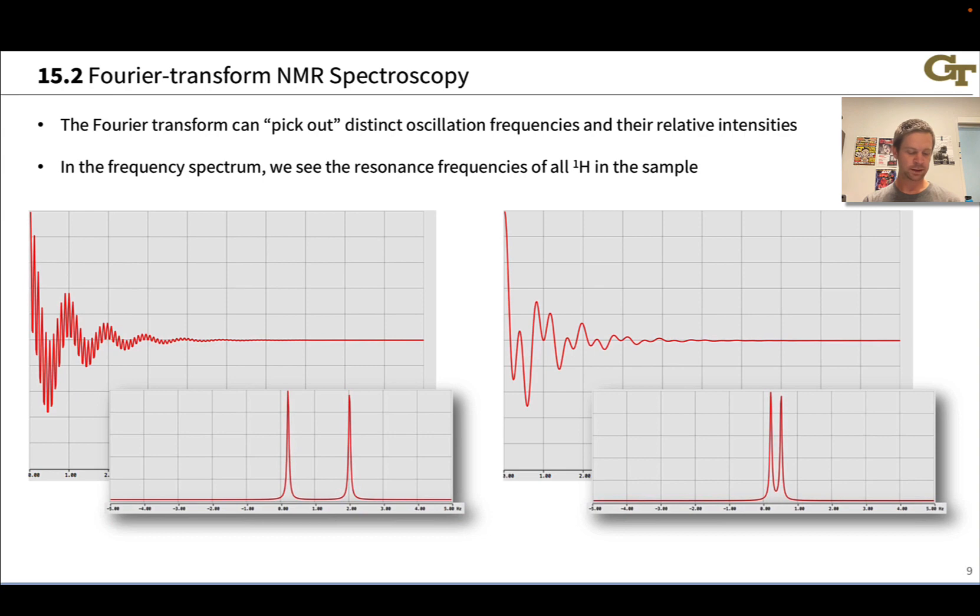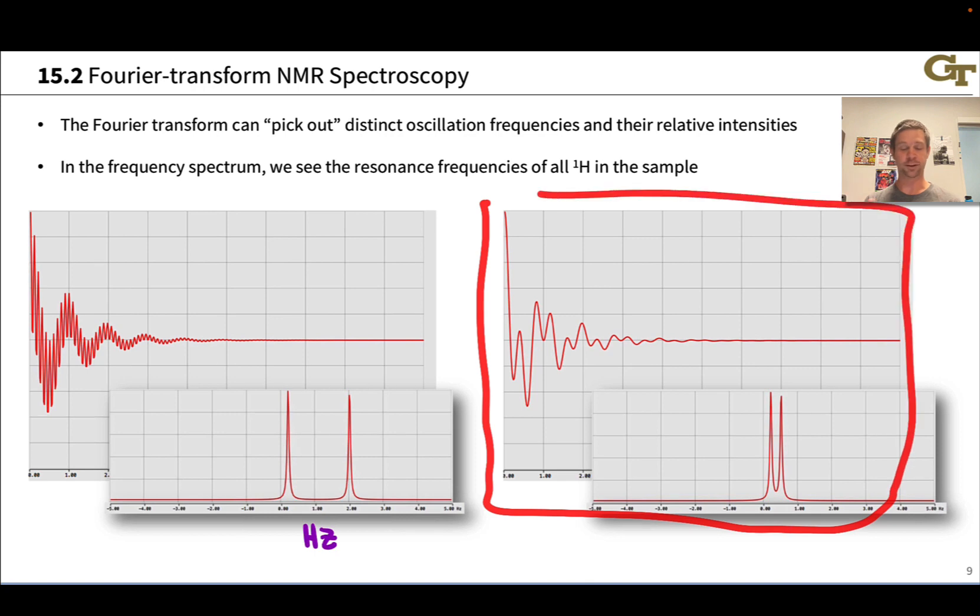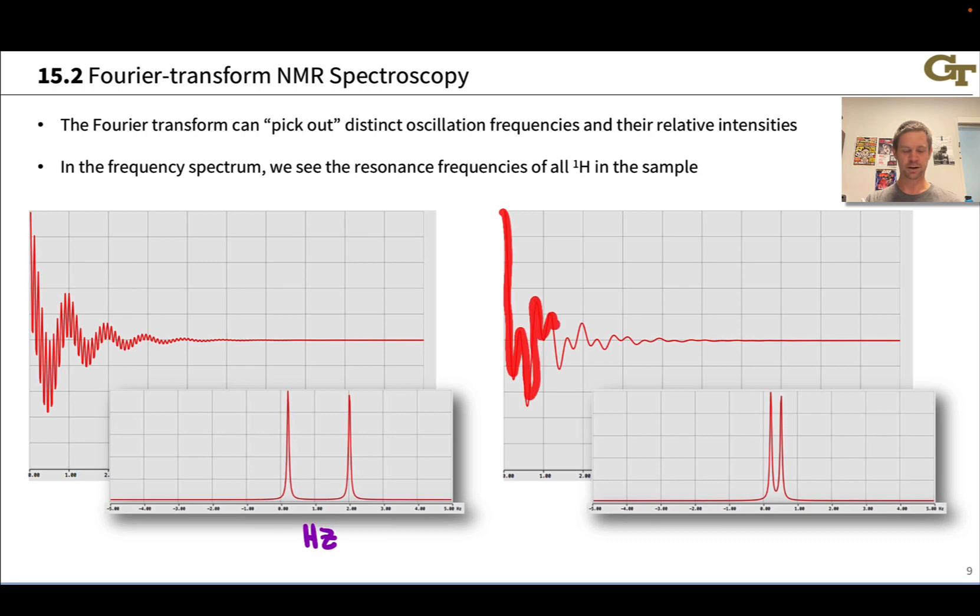The mathematics of the Fourier transform can pick this out immediately and put those two frequencies on a frequency spectrum. So here we have something like the frequency in Hertz along the x-axis and the intensity of response along the y-axis. This pair of graphs on the right is just another example of this with two signals that are closer in frequency now. The high frequency component is not quite as sharp. Those oscillations are a little bit slower and indeed in the frequency spectrum we see those peaks showing up a little bit closer together.